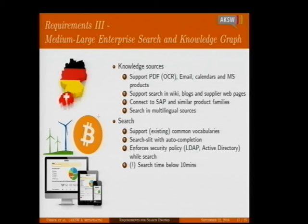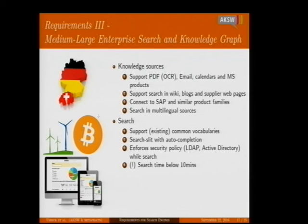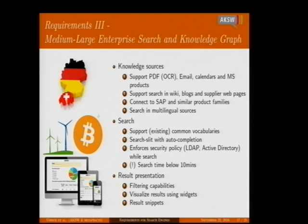Surprisingly, the influence of big players led to the understanding that search should be no more than a simple search box — no dropdown menus or forms, just a search field with autocomplete, Google-like. You can see how the big players influence research. For result presentation, they wanted filtering capabilities — faceted search like the Solr/JASA framework — and integration of different results using widgets so they can adapt the product for their customers.